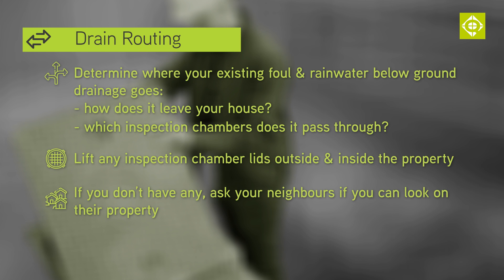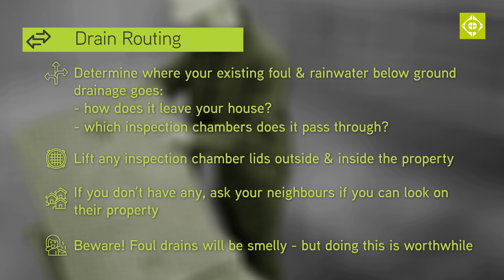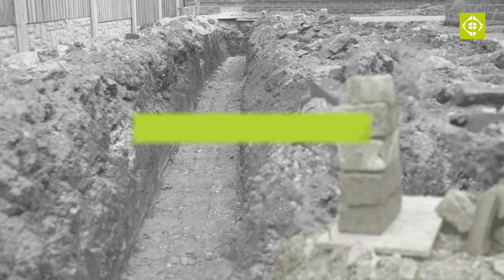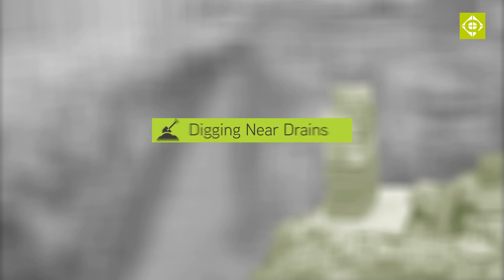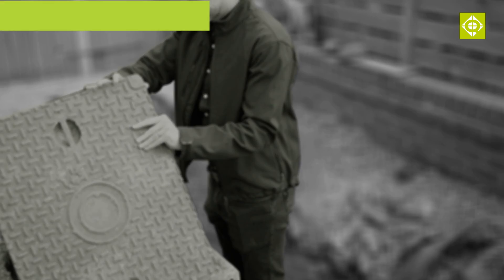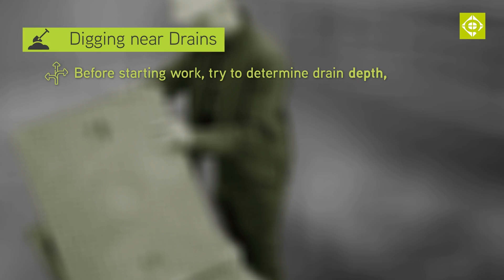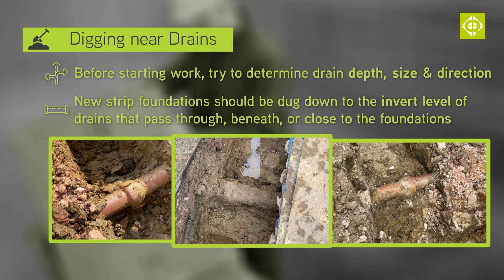If you don't have any inspection chambers, ask your neighbors if you can have a look on their property and do the same. Be aware that if they are foul drains, they will almost certainly be quite smelly — but doing this can pay off. You'll want to look at the drain depth, size, and direction to see how it might interact with your proposed foundation layout. You should try and figure this out before you start work.